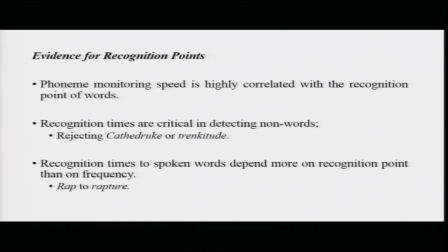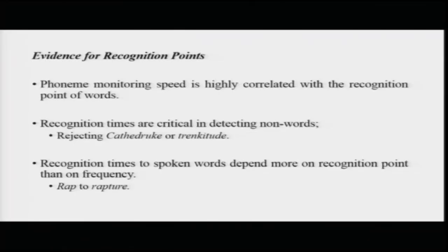A study used non-words resembling real words. 'Cathedruk' (from cathedral) - until you hear 'druk' you do not know it is not 'cathedral', so you wait until the end to reject it. 'Trankitude' is easier to reject because the recognition point comes much earlier - by 'trank' you already know no word matches and can quickly reject it. People are faster rejecting words like 'trankitude' where the recognition point is earlier compared to 'cathedruk' where the recognition point is later.